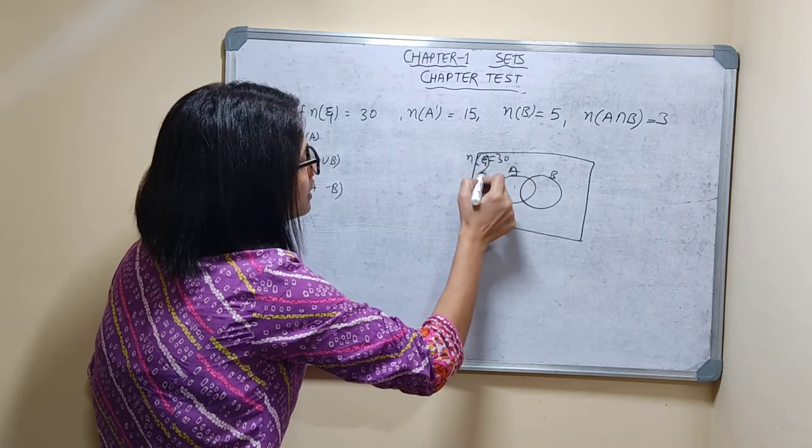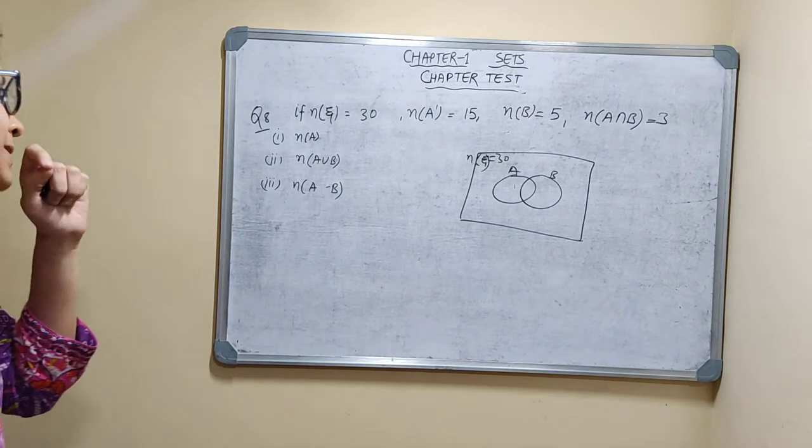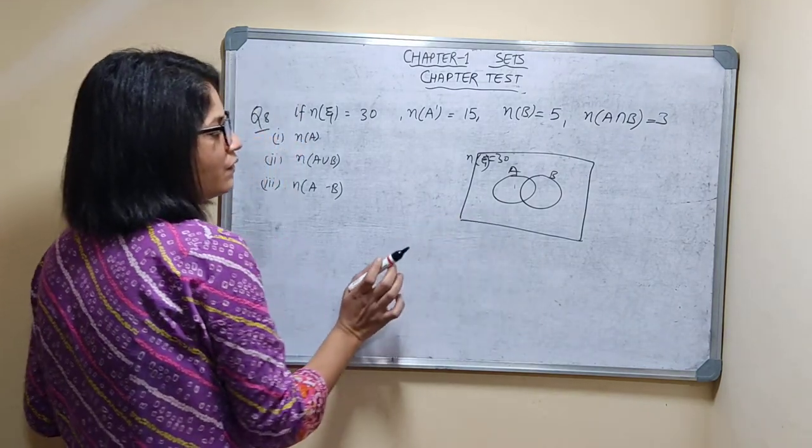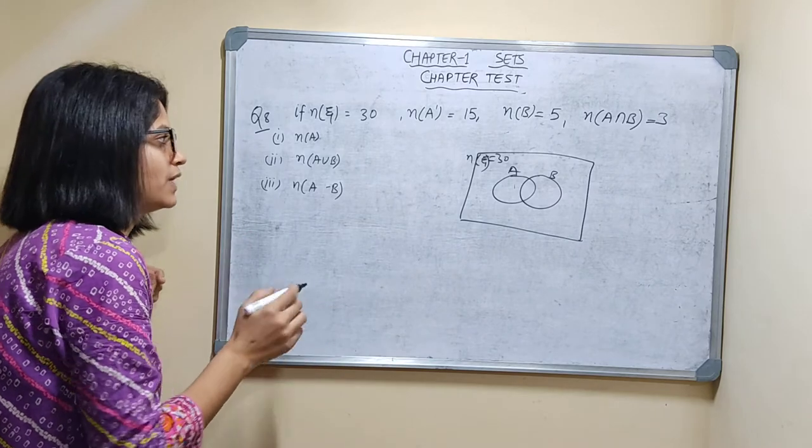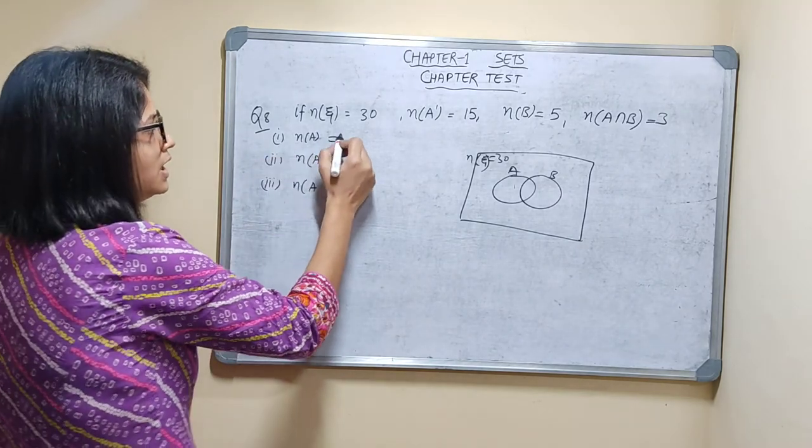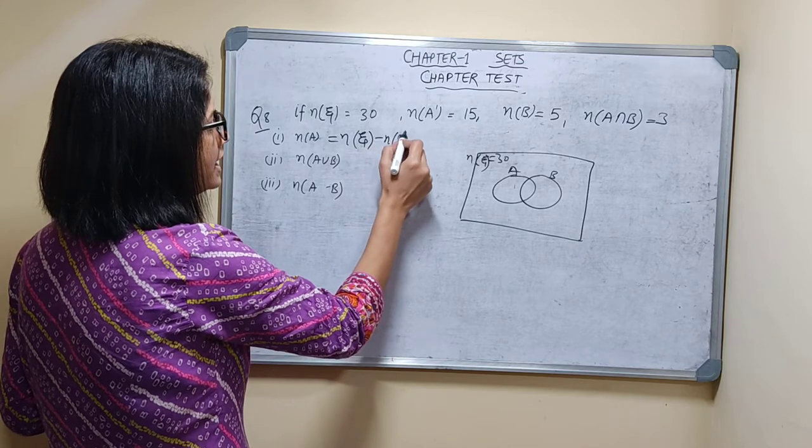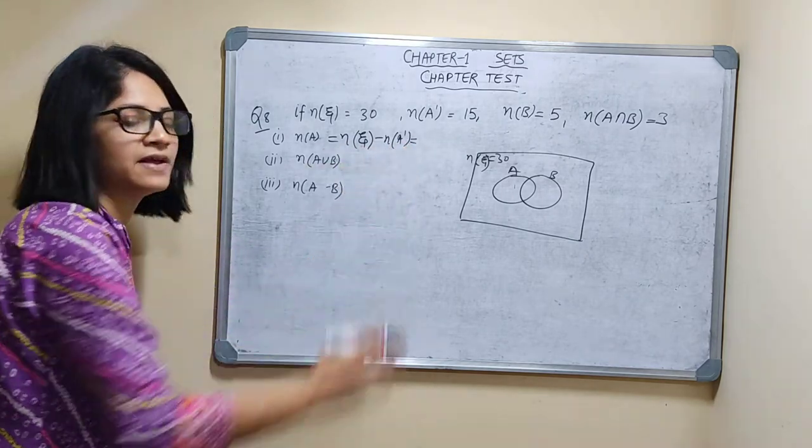Number of elements in epsilon is equal to 30. So, n(A') is equal to 15, n(B) is equal to 5, and n(A) will be n(ε) minus n(A'), n(ε) minus n(A').